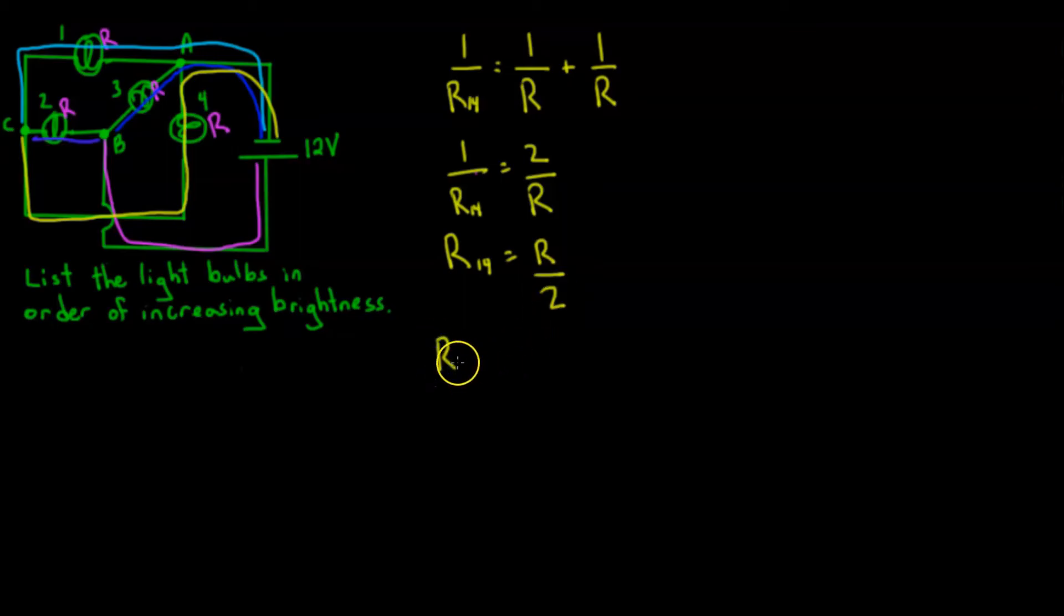Take the resistance of R_2, which is just R, and then add this equivalent resistance of 1 and 4, which is R over 2. That's a total resistance of 3 halves R.